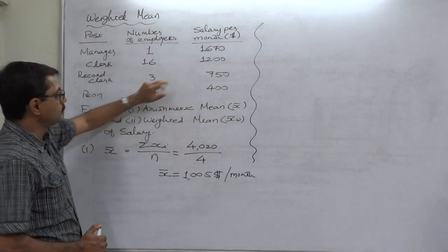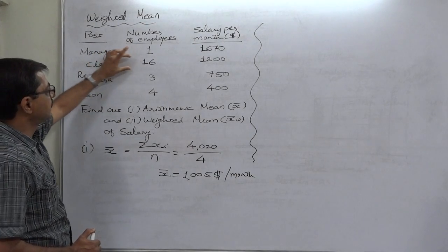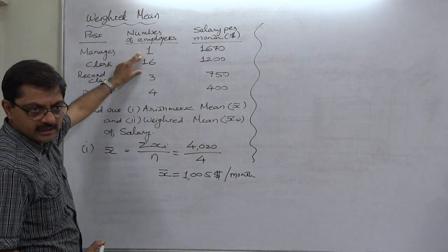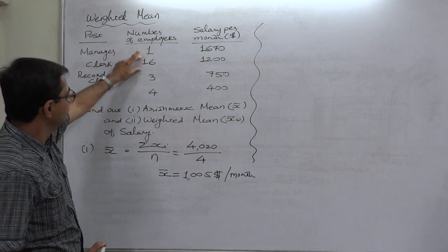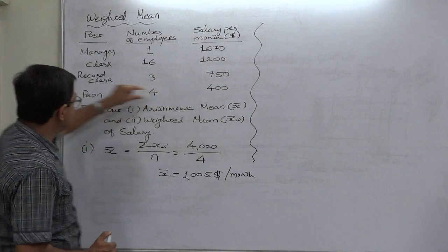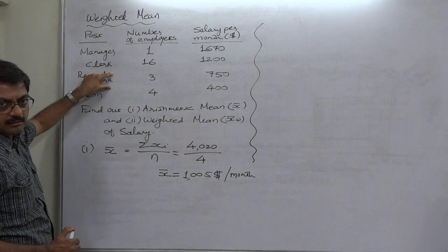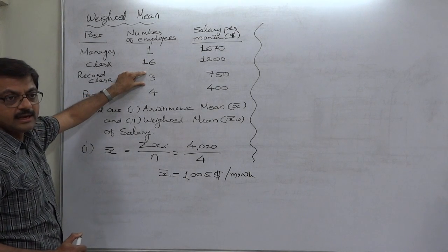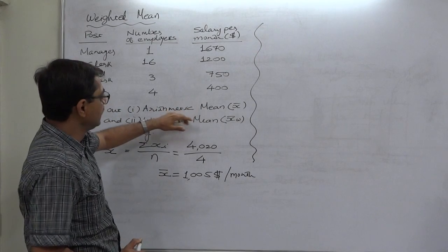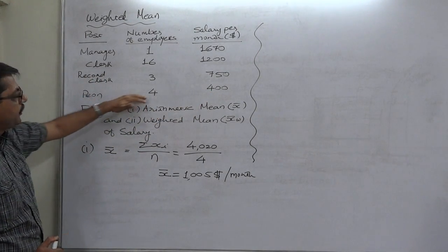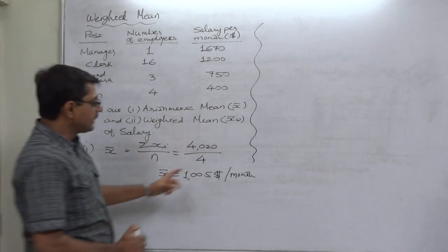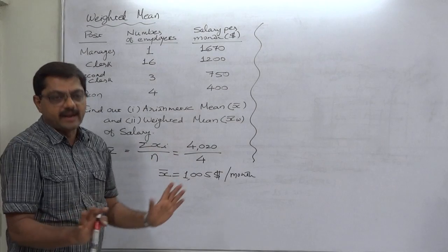So total salary paid to all 16 clerks will be 1200 multiplied by 16, that means 19,200. Similarly, 750 salary is paid to a single record clerk and there are three record clerks, so total salary payment will be 2250. And in the same way, total salary paid to 4 peons will be 1600. When we calculate arithmetic mean or simple mean, we ignore this fact.